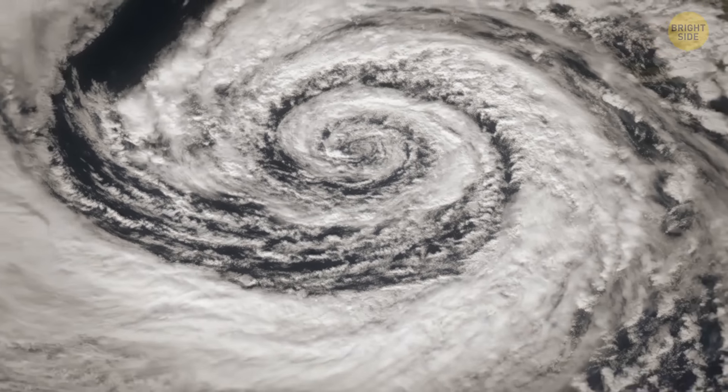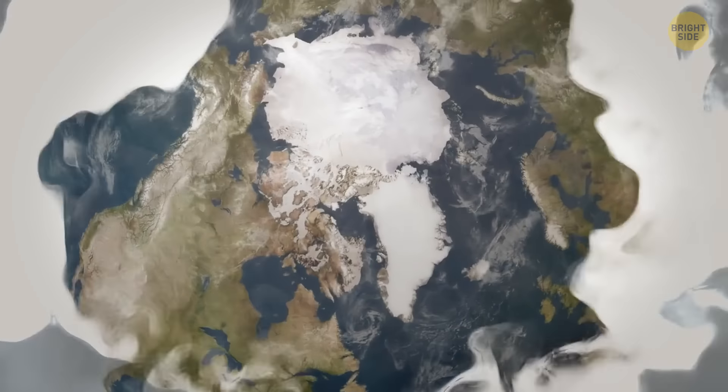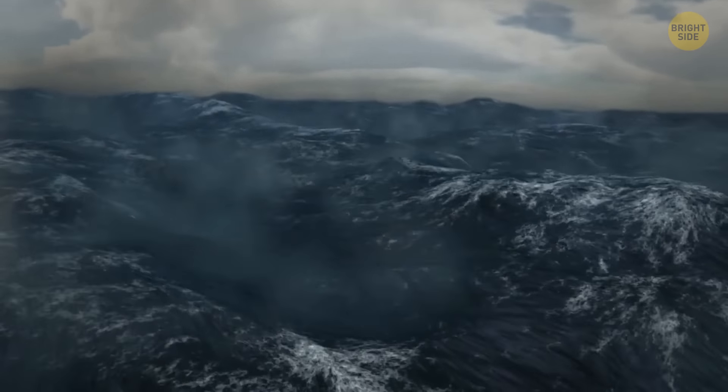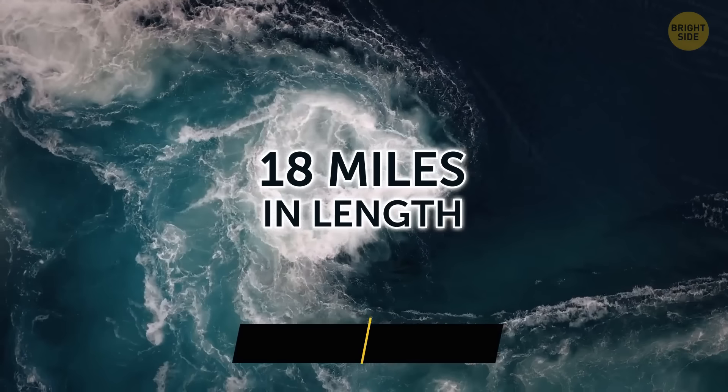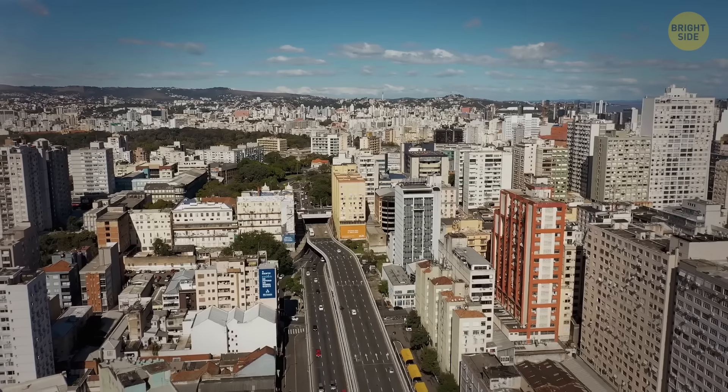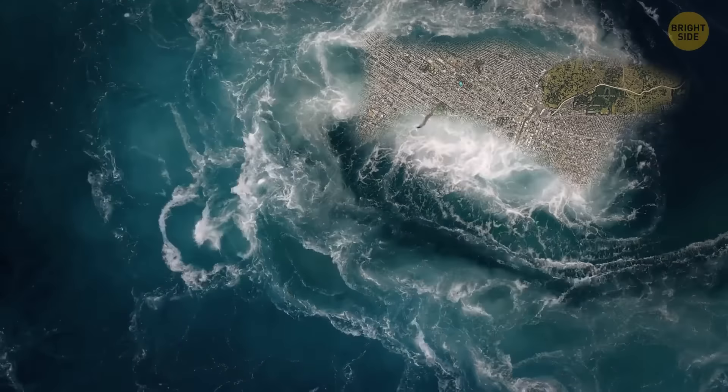However, some whirlpools are hundreds of times bigger, but they are invisible. Giant whirlpools in the Arctic Ocean can reach 18 miles in length. This is the size of a city. And these giant whirlpools are invisible.